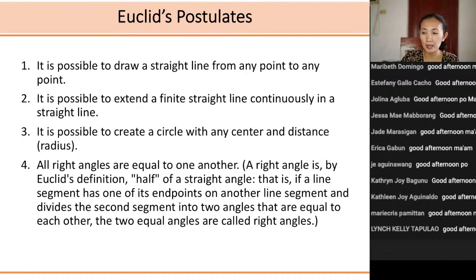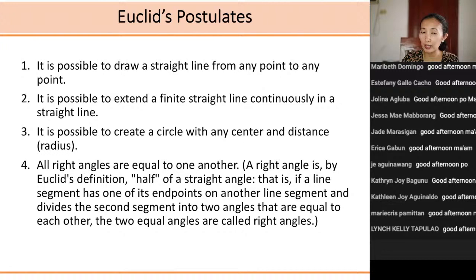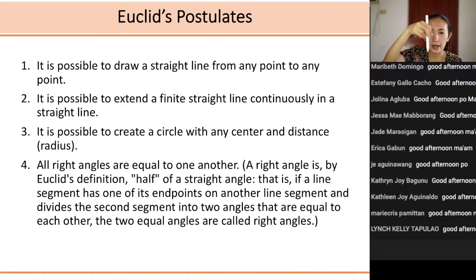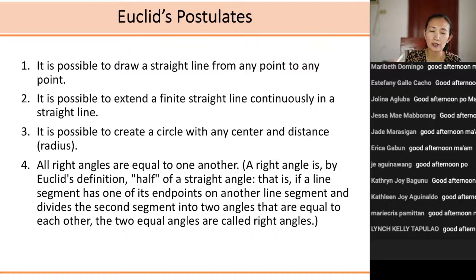The third postulate says: it is possible to create a circle with any center and distance as radius. Given a point and a certain distance, you can use a compass and construct a circle around that point having that distance as the radius. It's physically verifiable and seemingly obvious, though in mathematics we have to be careful about using the word obvious.